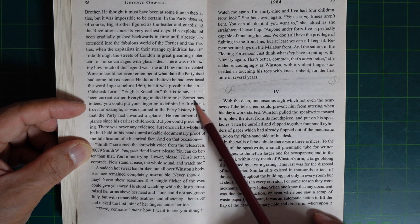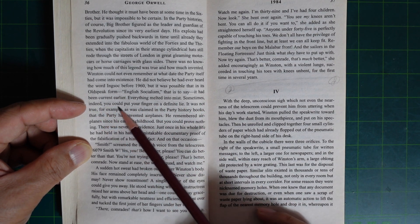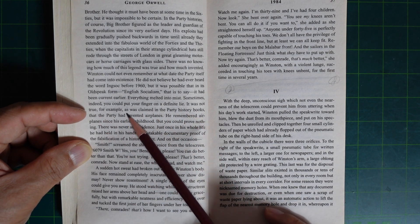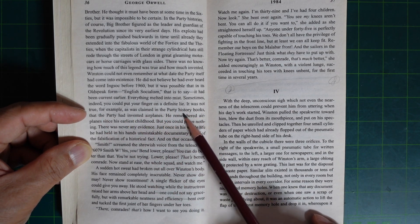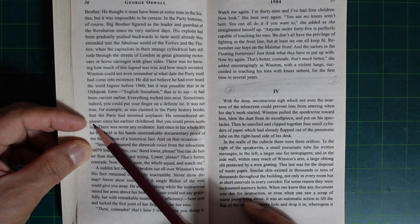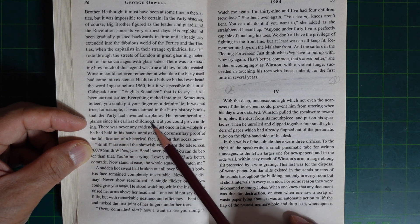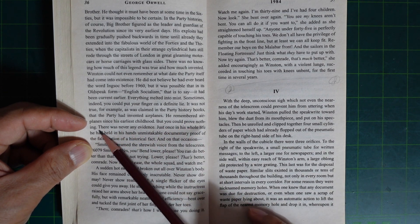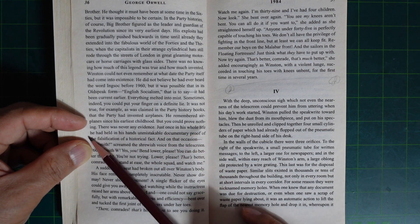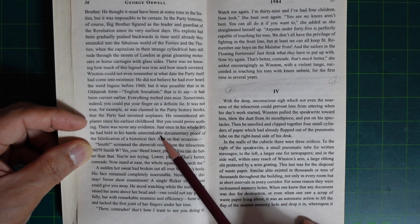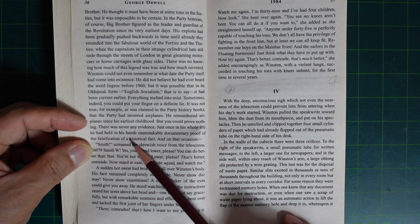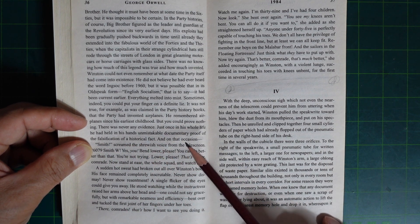There was no knowing how much of this legend was true and how much invented. Winston could not even remember at what date the Party itself had come into existence. He did not believe he had ever heard the word Ingsoc before 1960, but it was possible that in its Oldspeak form, English Socialism, it had been current earlier. Everything melted into mist. Sometimes, indeed, you could put your finger on a definite lie. It was not true, for example, as was claimed in the Party history books, that the Party had invented airplanes. He remembered airplanes since his earliest childhood. But you could prove nothing. There was never any evidence.